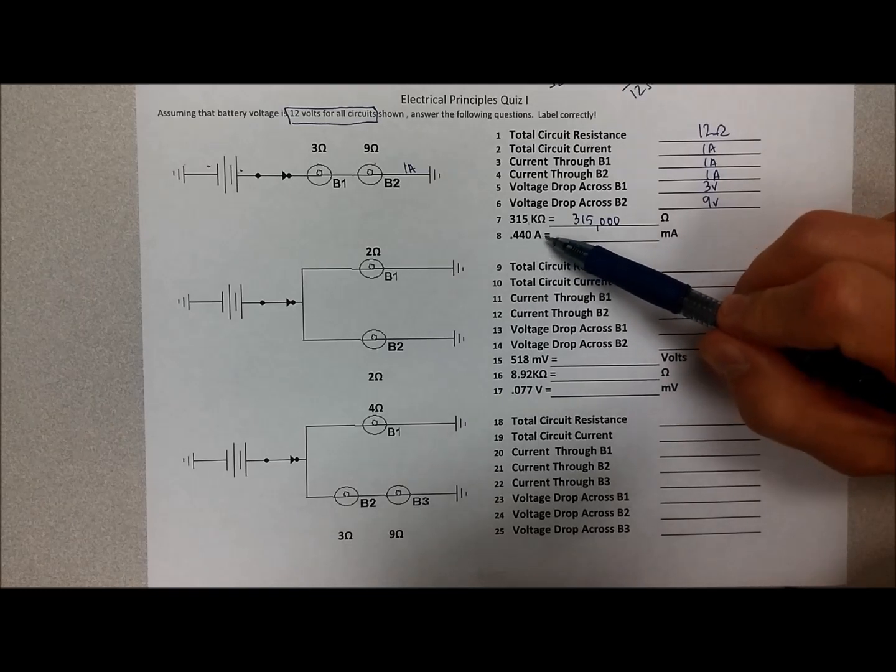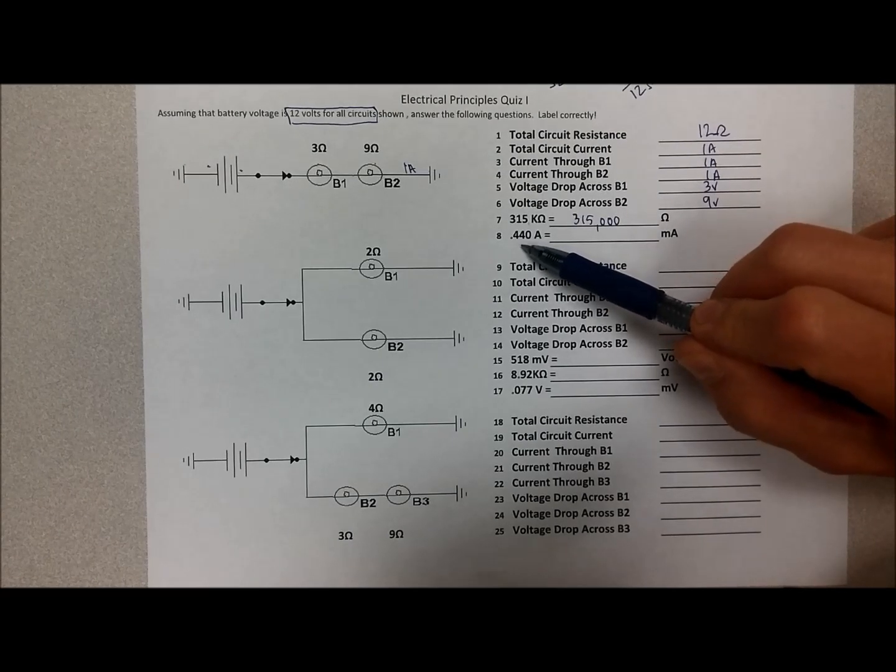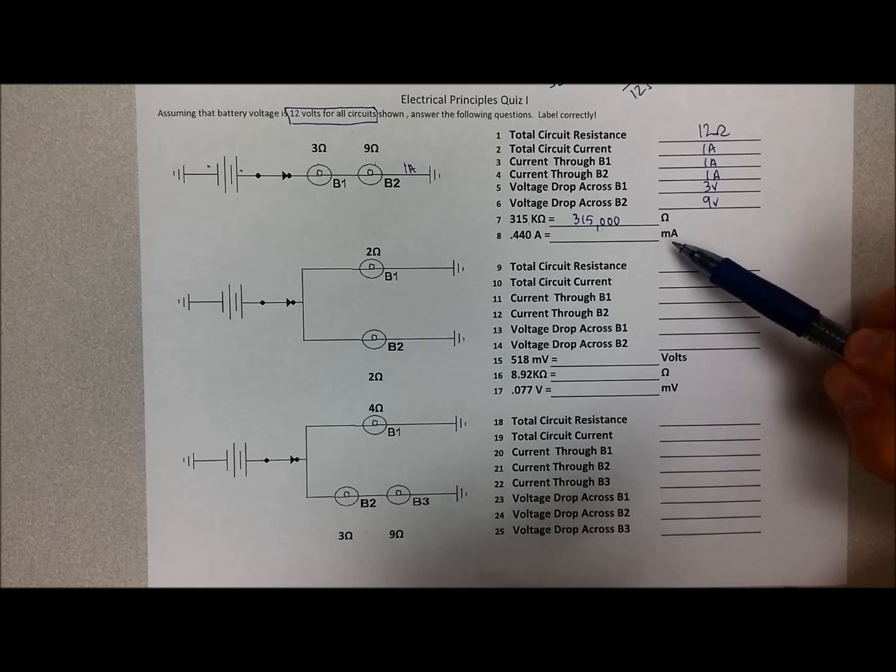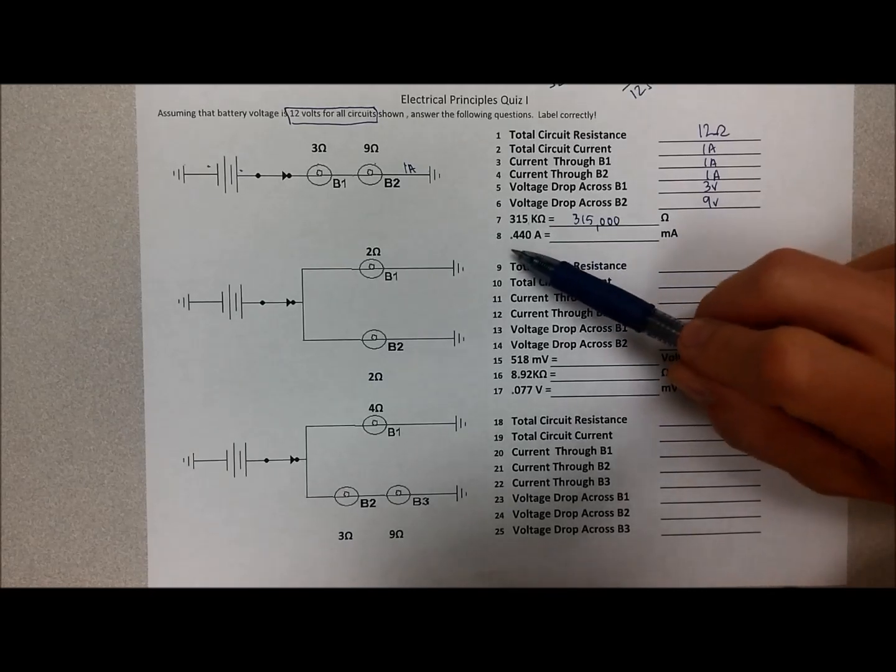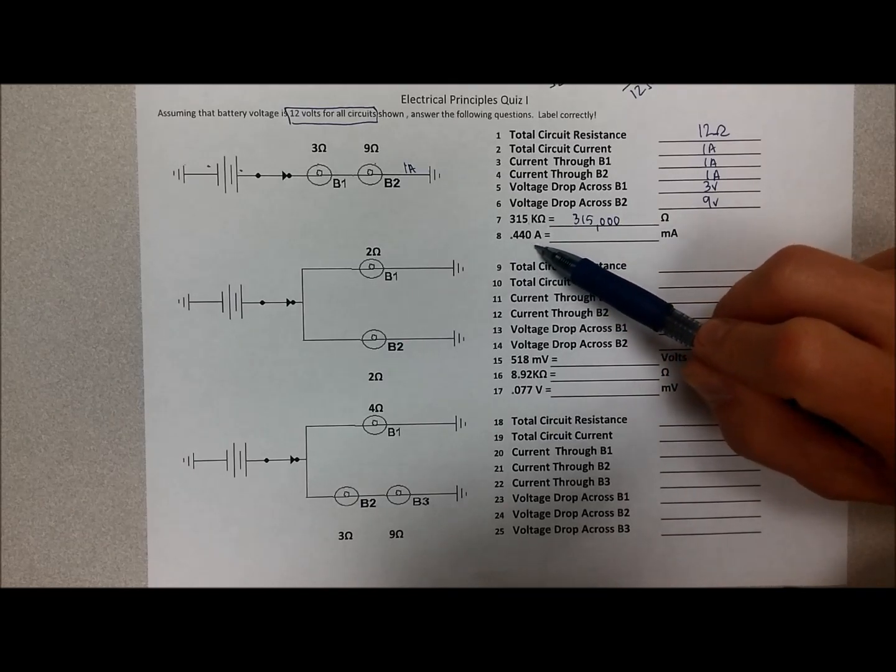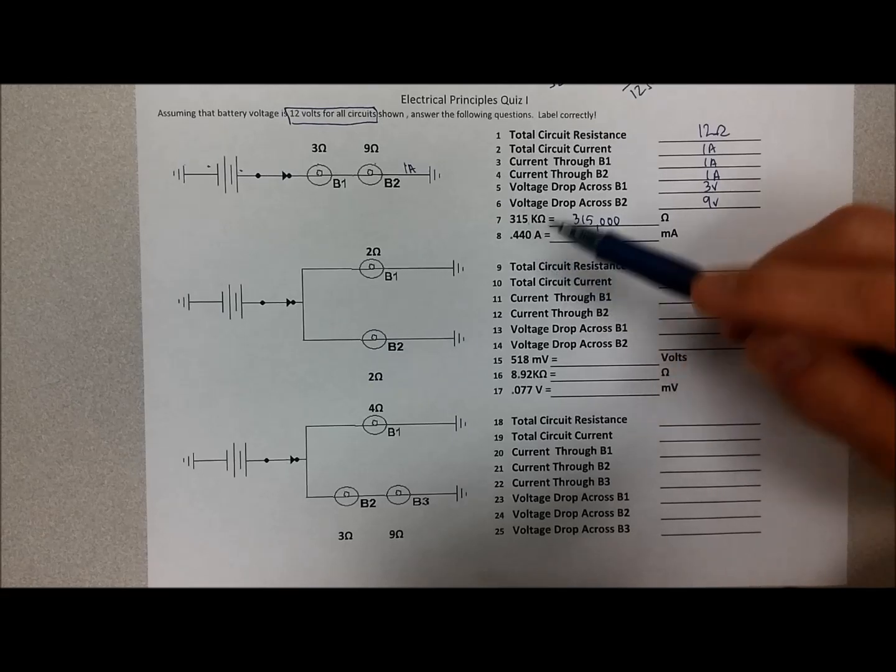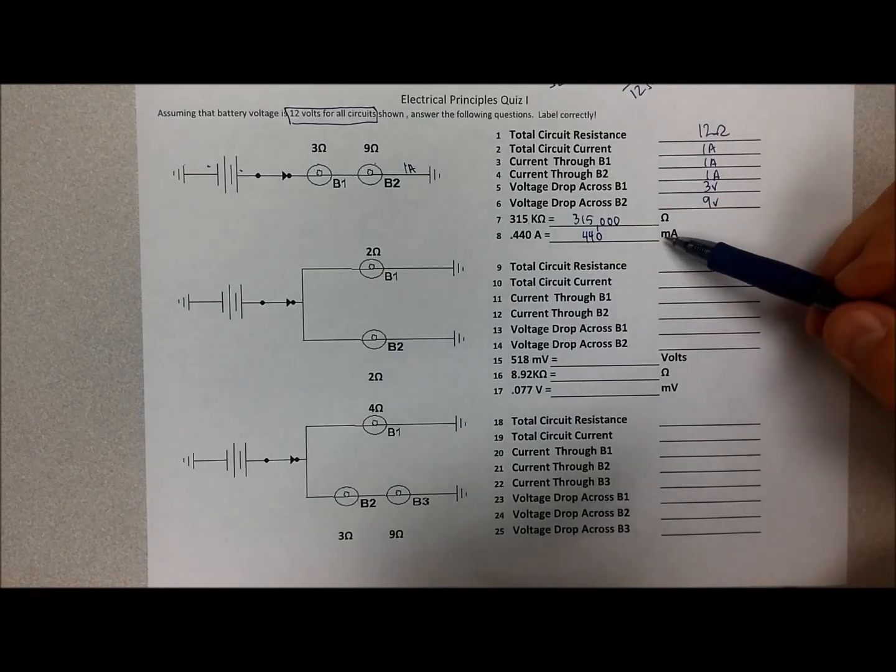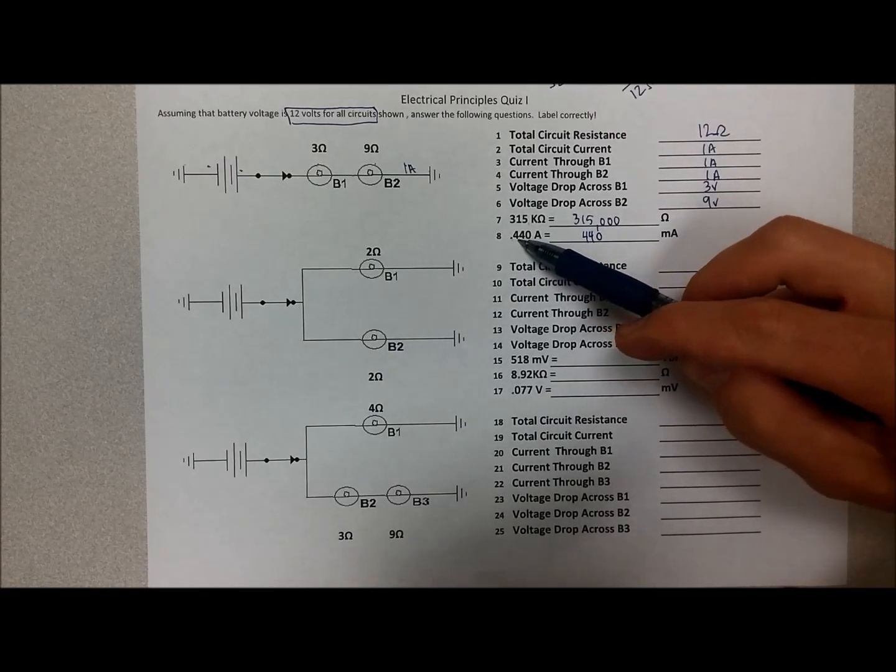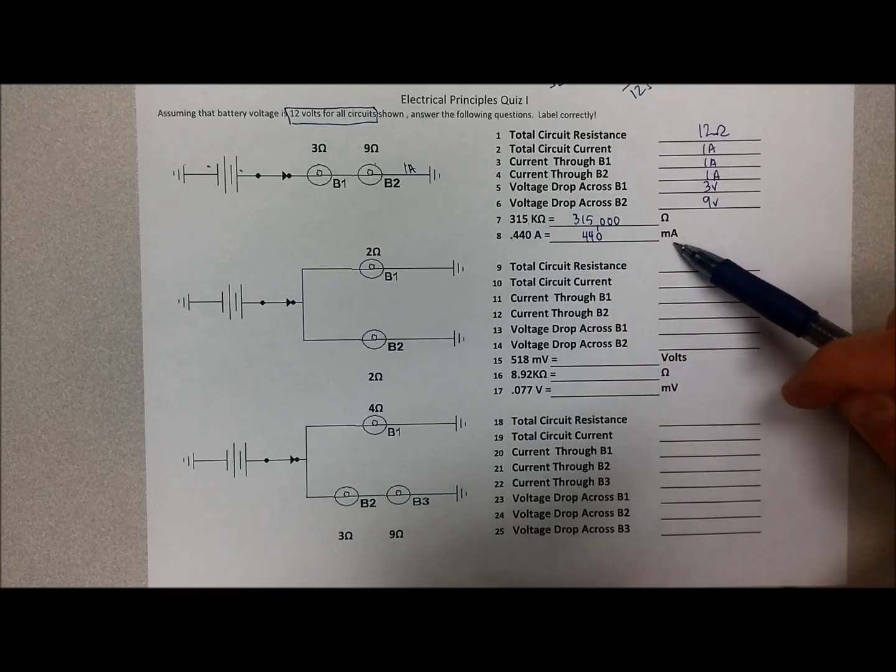440 amps, I'm sorry, 0.440 amps is less than an amp. Remember that one amp is a thousand milliamps, and 500 milliamps would be half of an amp. So this is less than half of an amp. In fact, it's about 0.4 amps or 440 milliamps. But depending on how you look at it, you can also say, well, we move the decimal over three places to the right again because we're going from a larger denomination to a smaller one.